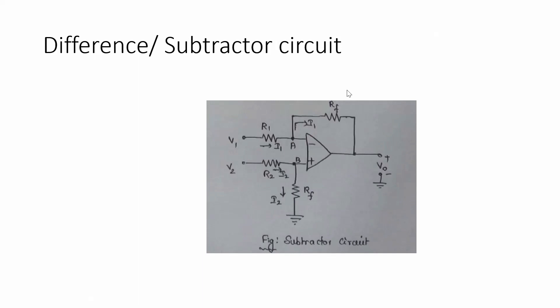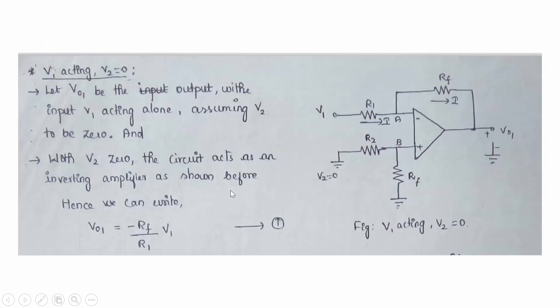Next is the difference amplifier circuit, where the output voltage is the difference of the input voltages. It operates in differential mode — inputs are applied to both inverting and non-inverting terminals. If inputs are the same, output is zero; if inputs are different, output is the difference. V1 is applied to the inverting terminal and V2 to the non-inverting terminal, with feedback resistances at both terminals.